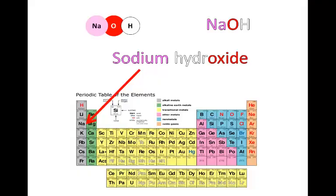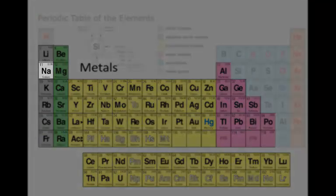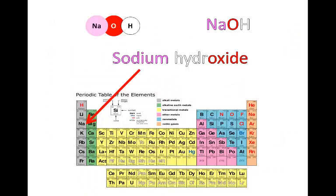Sodium is a metal. You find it here on the left-hand side of the periodic table, in the first group — it's an alkaline metal, to be exact. And it's bonded to the hydroxide group, OH. NaOH.